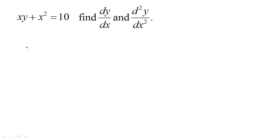When we're working with implicit differentiation, we don't have to stop at the first derivative — we can find higher order derivatives as well. So here's an example where we want to find the first derivative, and once we've found that, we'll go ahead and find the second derivative.